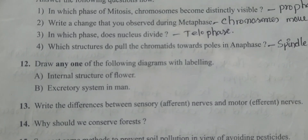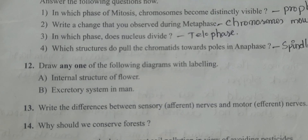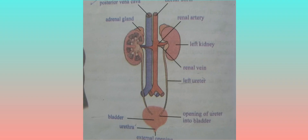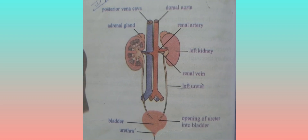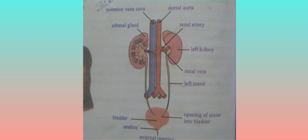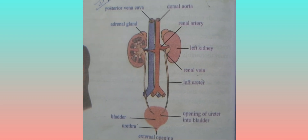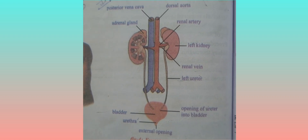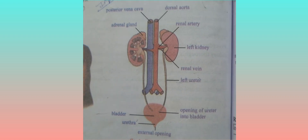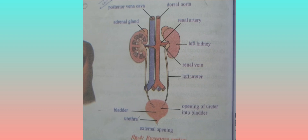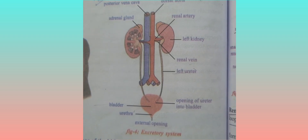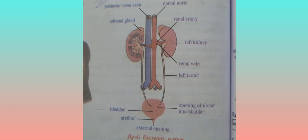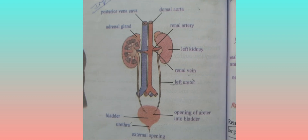Option B: excretory system of man. Label parts including dorsal aorta, renal artery, left kidney, right kidney, renal vein, left ureter, opening of ureter into bladder, and urethra. Four labelled parts are required for full marks.